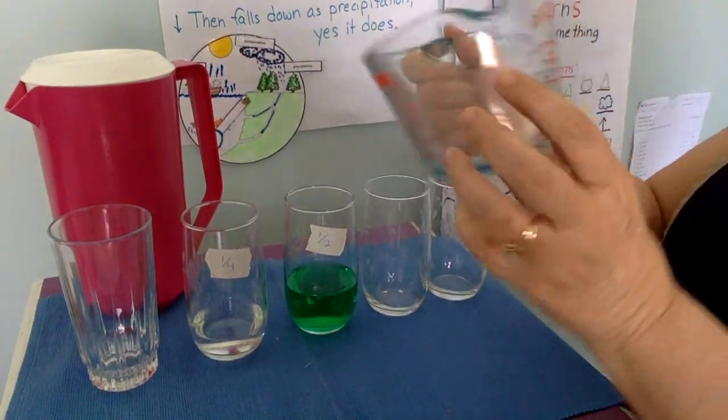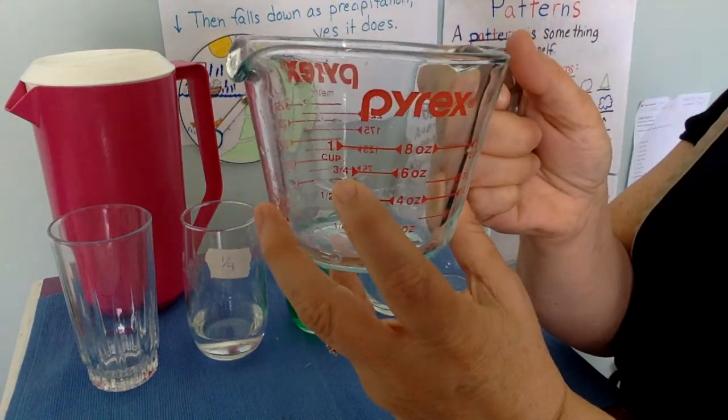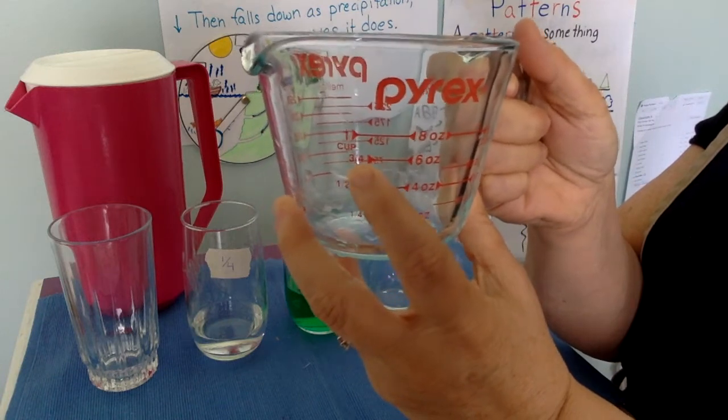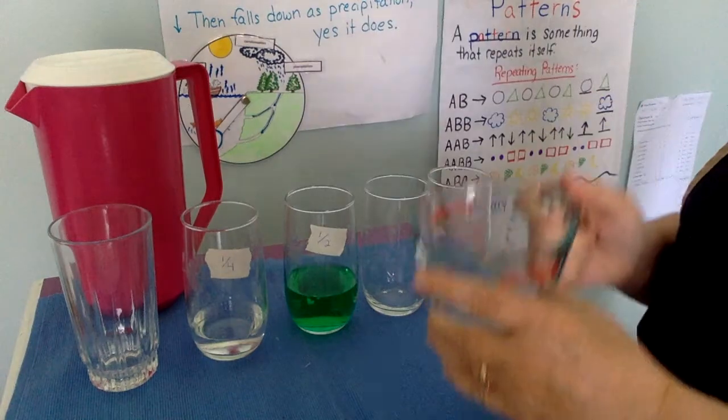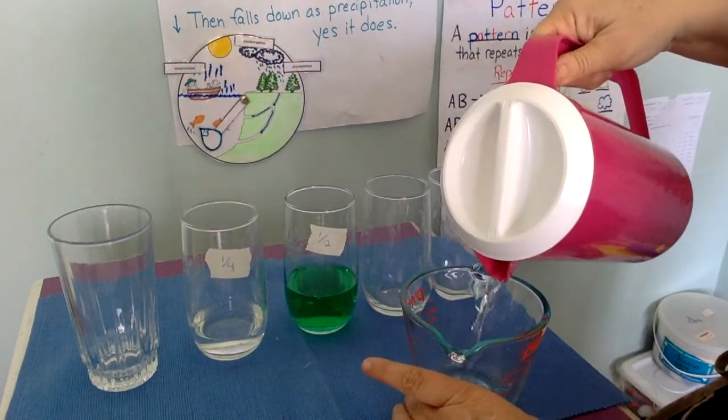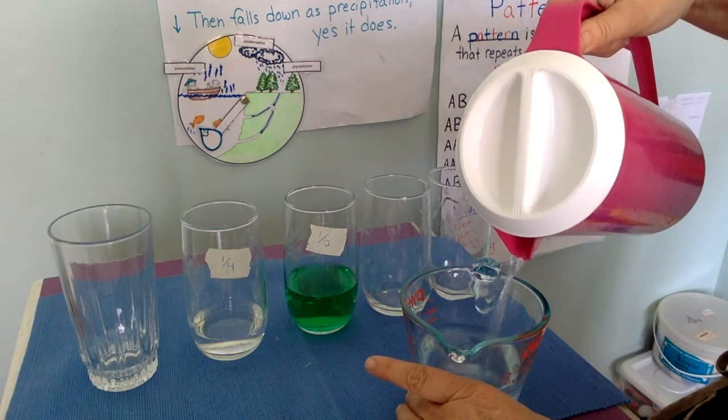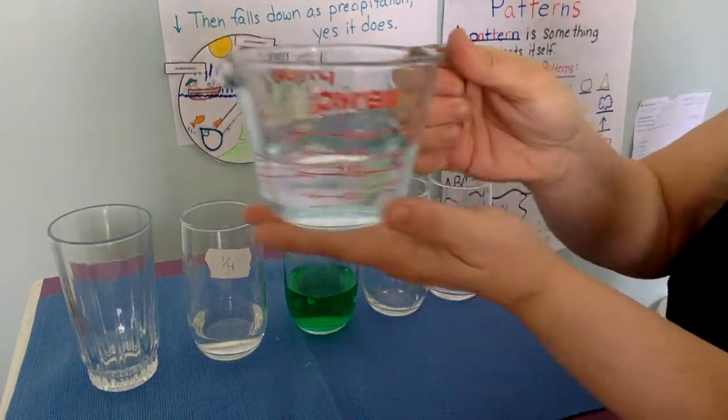The next one I'm going to do three quarters of a cup. You see the three and a slash and a four, three quarters of a cup. I'm going to pour the water all the way up to that line. This is measuring liquid. Water is a liquid. You see that?